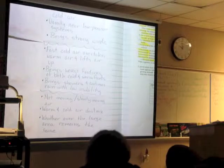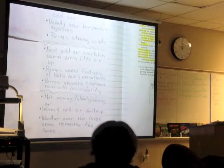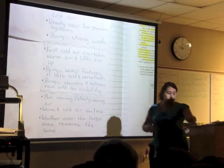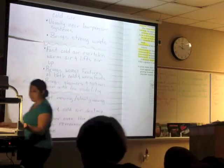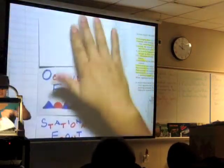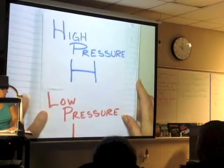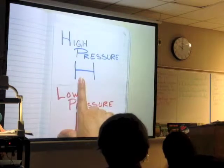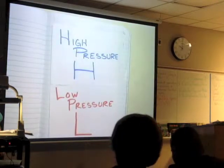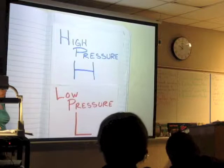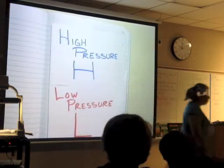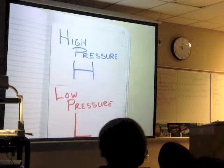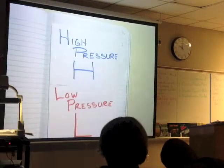You need to know the symbols and the different weather predictions you can make when you see them. On Monday, I'll give you two weather maps and you'll have to predict the weather in different places just by looking at the symbols. There are two more symbols on the other page. This next one covers high pressure and low pressure areas. High pressure is always a big H, usually in blue. Low pressure is always a big L, usually in red.